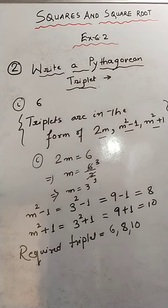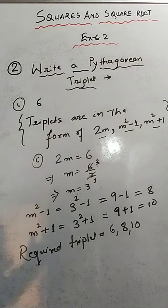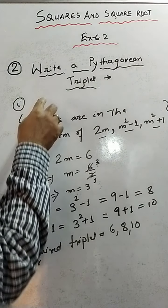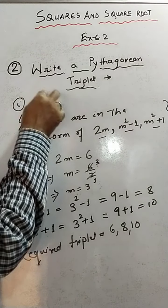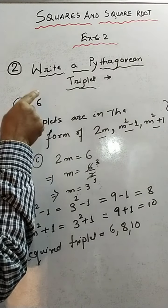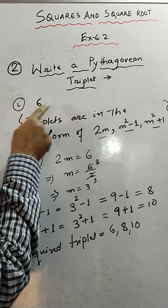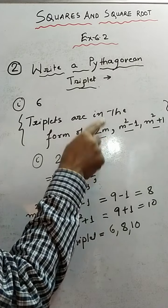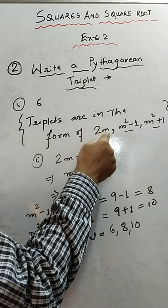So what we have observed is that whenever any number is given, you always need to compare it with 2m to get the value of m.